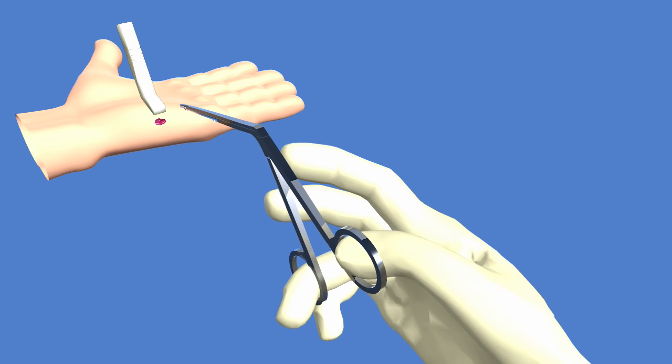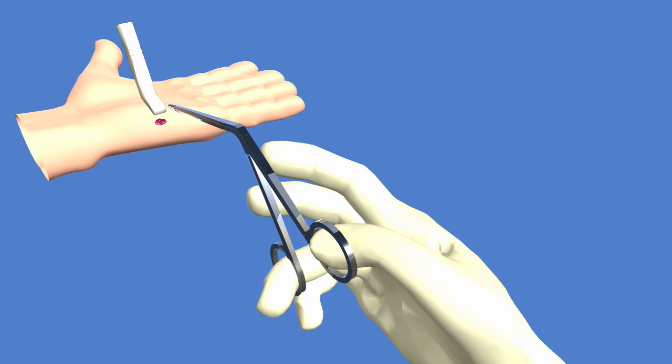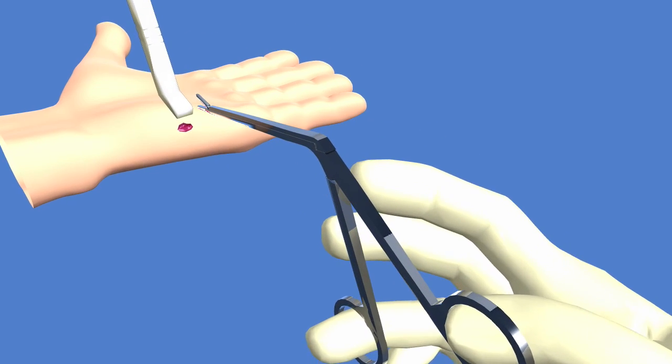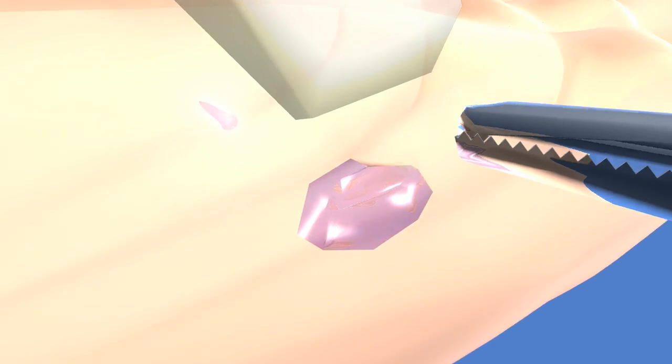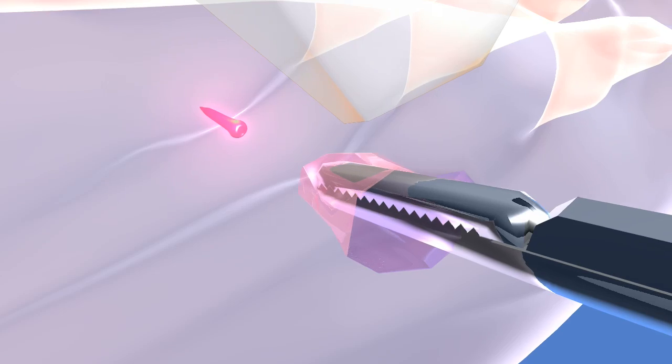The following animation illustrates ultrasound guided foreign body removal of a wooden fragment embedded in the hand. During ultrasound guided foreign body removal, after making a small incision in the skin.